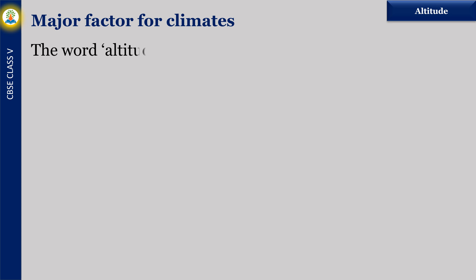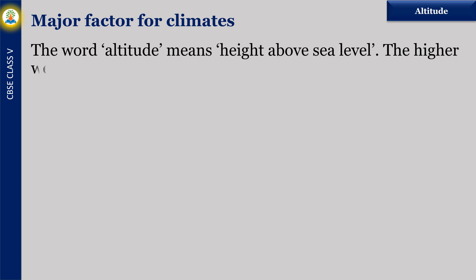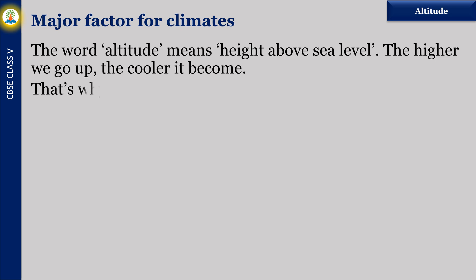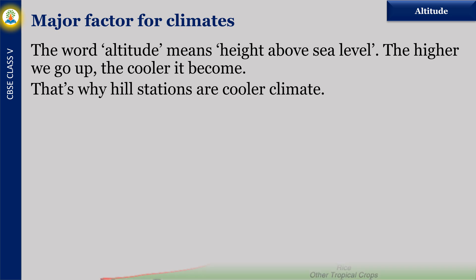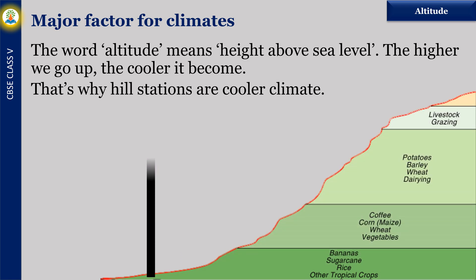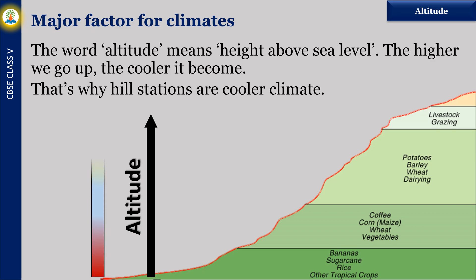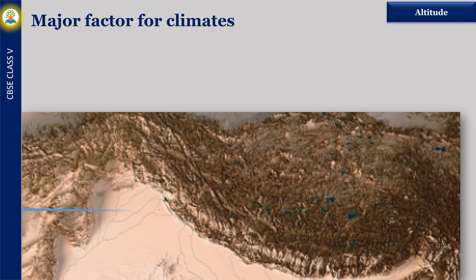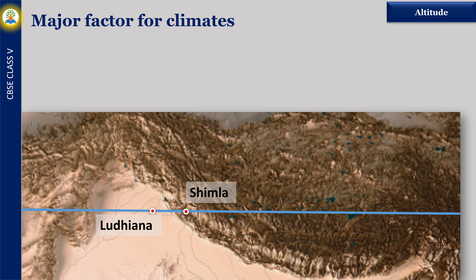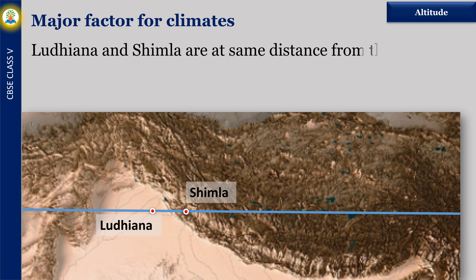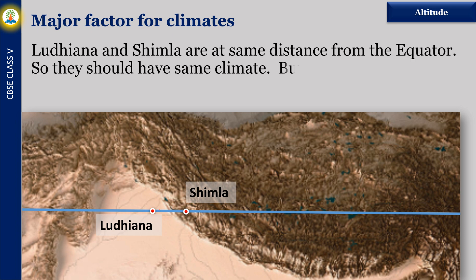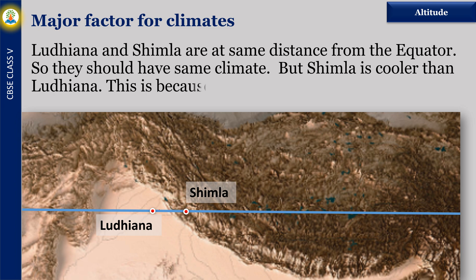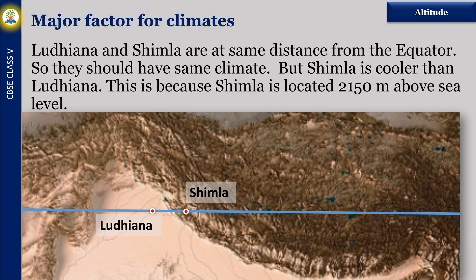The word altitude means height above sea level. The higher we go up, the cooler it becomes. That is why hill stations have a cooler climate. For example, Ludhiana and Shimla are at the same distance from the equator, so they should have the same climate. But Shimla is cooler than Ludhiana because Shimla is located 2,150 meters above sea level.